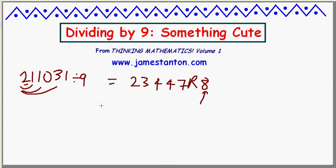So I bet the answer is 23447 with a remainder of 8. Just do the partial sum of the digits. Very mysterious why on earth this would be working.